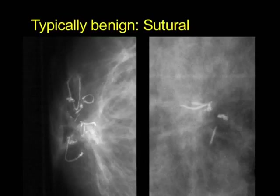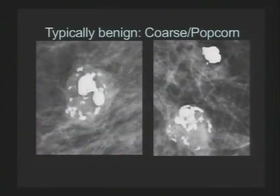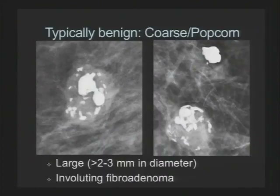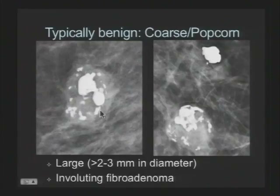The next category is sutural calcifications — they look manmade and calcified. You don't see these often, but you do see them. After that are coarse or popcorn calcifications, usually seen with a fibroadenoma that's involuting. They're large, thick, coarse calcifications, which may sometimes have the soft tissue of a mass associated with them or sometimes not. Either way, they're considered benign.